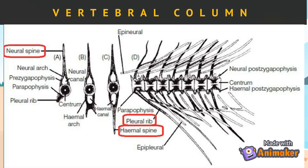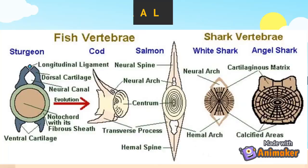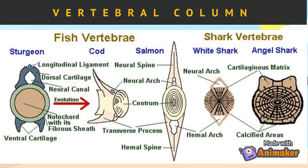This figure shows the differences in the vertebrae of bony fishes such as sturgeon, coelacanth, and salmon, and sharks as cartilaginous fish. Note the differences in the appearance of centra, neural spine and arch, and hemal spine and arch among these species.